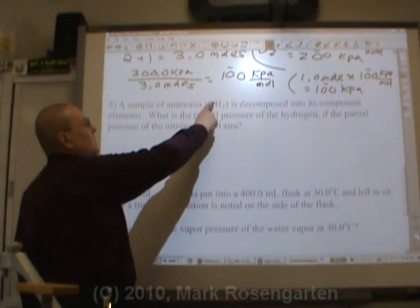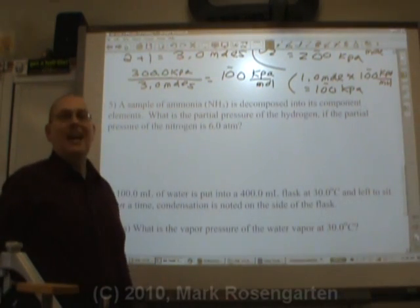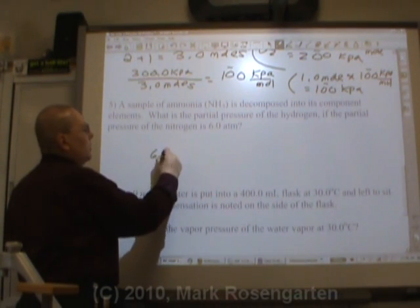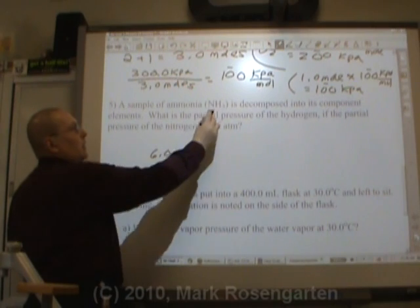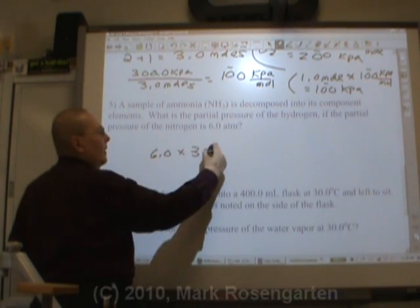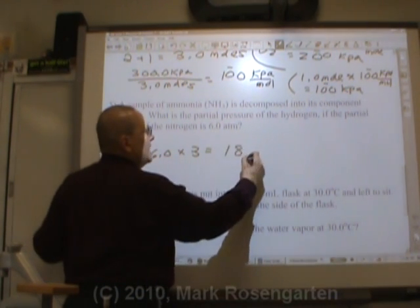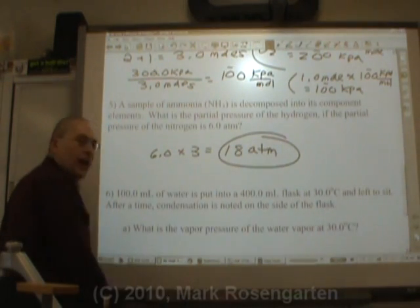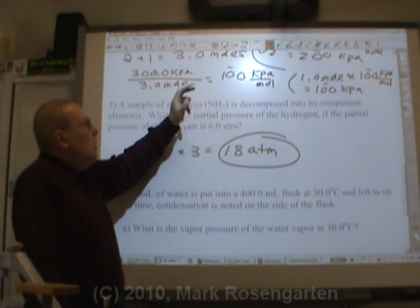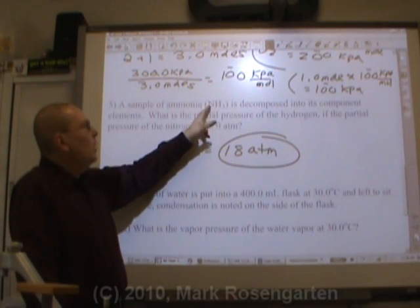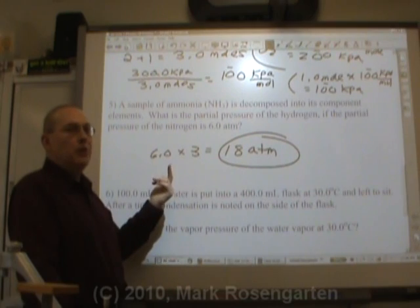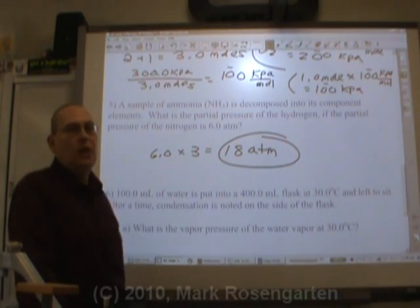Whatever nitrogen is, hydrogen is going to be 3 times as much. So if the partial pressure of the nitrogen is 6.0, for the nitrogen, the hydrogen will be 3 times that amount. And that's going to be 18 atm, the partial pressure of the hydrogen. For every 1 nitrogen, you get 3 hydrogens. It's a 1 to 3 ratio. And that works the same with pressure. 1 to 3 ratio in pressure as well.